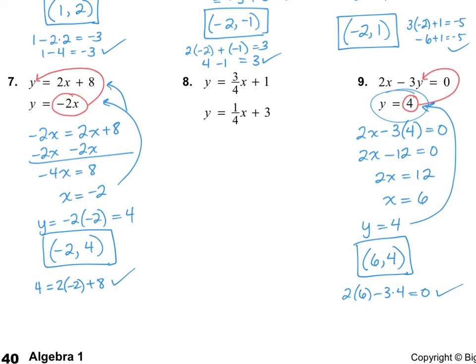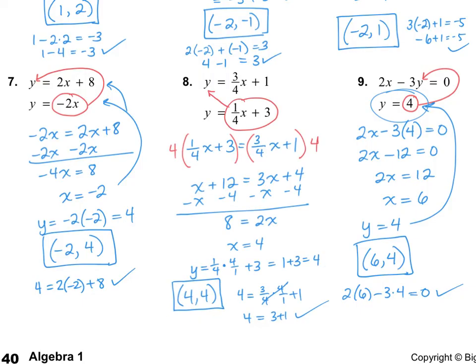Try number 8 on your own. For number 8, I got (4, 4). You'll notice I used a little trick to get rid of fractions — I multiplied by the denominator. But don't forget: if you do that, you have to multiply into the second term as well, giving x plus 12. On the other side, multiplying in gives 3x, and don't forget to multiply by the other number too, giving plus 4. That's a useful trick for eliminating fractions.